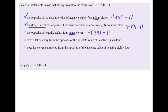Next: 11 taken away from the opposite of the absolute value of negative 84. Remember, 'taken away from' is one where we have to switch the order — 11 comes after the minus sign and everything else comes before. So I put the minus sign, then 11 afterward, and in front: the opposite of the absolute value of negative 84. That matches our expression, so I check this box.